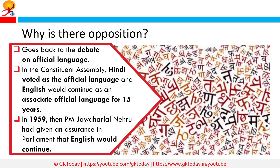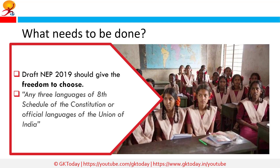However, as early as 1959, Jawaharlal Nehru had given an assurance in Parliament that English would continue to be in use as long as non-Hindi-speaking people wanted it. So what can be done? There are numerous attractive ways to promote a language to the desired extent. Instead of prescribing a set of languages, the Draft National Education Policy of 2019 should give the freedom to choose any three languages of the 8th Schedule of the Constitution or official languages of the Union of India as offered in the scheme of studies by the boards of secondary education. That could be a win-win solution for all.